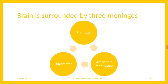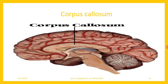The brain is surrounded by three meninges: piamater, duramater, and in between them there is one more meninge called the arachnoid membrane. Three meninges surround the brain of mammals. The corpus callosum is the structure that connects the two cerebral hemispheres. The left and right cerebral hemispheres are joined by the corpus callosum — this is the most important characteristic feature of all placental mammals. Corpus callosum is the transverse nerve band connecting the two cerebral hemispheres.